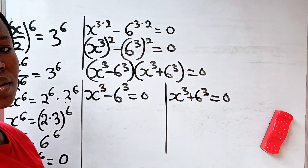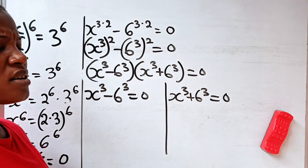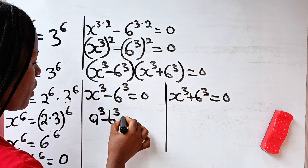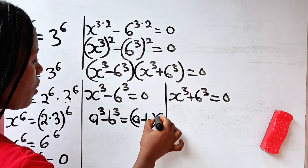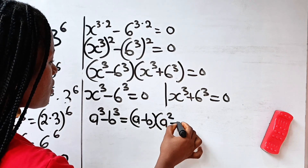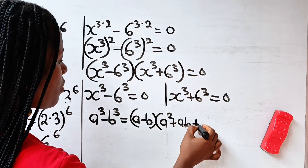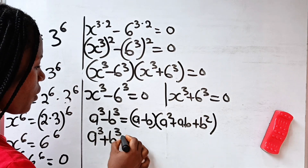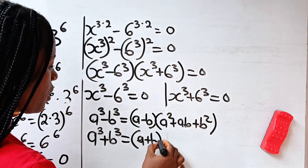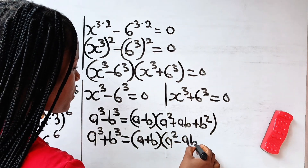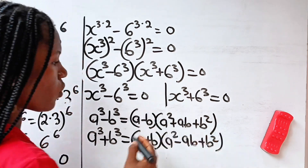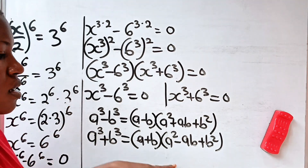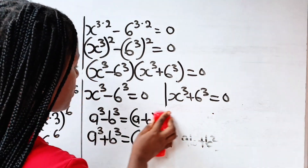Now I want us to note one thing. Remember the algebraic identity that states that a to the power of 3 minus b to the power of 3 is equal to a minus b multiplied by a squared plus ab plus b squared. And a to the power of 3 plus b to the power of 3 is equal to a plus b multiplied by a squared minus ab plus b squared. So we are going to use these identities to expand both expressions.